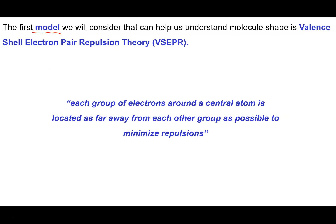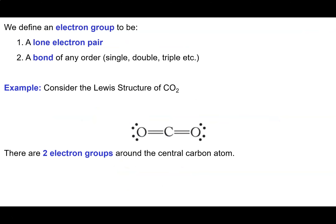The simplest model we're going to consider that can help us understand molecular shape is called the valence shell electron pair repulsion theory, or VSEPR theory. It's a very simple idea: electrons are negatively charged and things with the same charge repel one another. So VSEPR theory says each group of electrons around a central atom is located as far away from each other group as possible in order to minimize repulsions. An electron group means either a lone pair of electrons or a bond of any type — it doesn't matter whether it's single, double, or triple; that counts as one electron group.